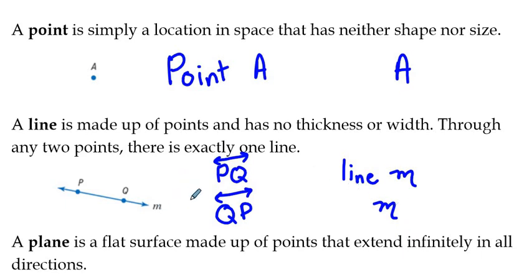Another note about lines here. Through any two points, there is exactly one line. That should be an Algebra 1 review sort of concept right there. Through any two points, there is exactly one line.